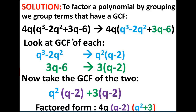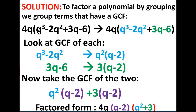First group: q³ - 2q². GCF is q², giving q²(q - 2). Second group: 3q - 6. GCF is 3, giving 3(q - 2). Both groups share the factor (q - 2). Taking (q - 2) outside, the remainder is q² + 3. Don't forget we already factored out 4q at the beginning. So the complete factored form is 4q(q - 2)(q² + 3).